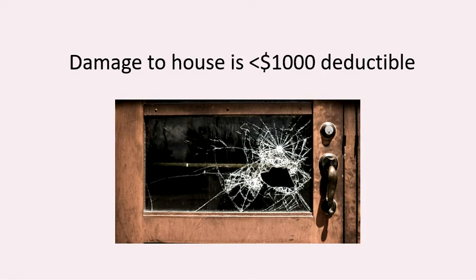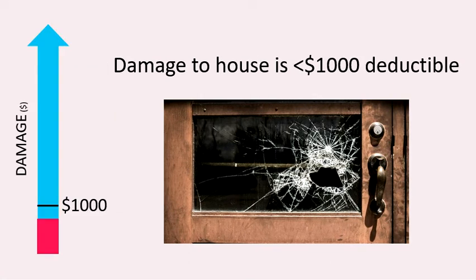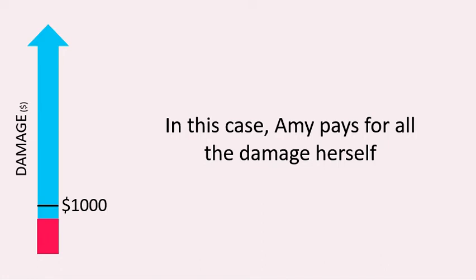There are two possibilities. Damage to the house can be less than $1,000, and that would look like the graph on the left-hand side — you'll see a red area showing the damage is less than the deductible. Maybe a rock flew from the tornado and broke a window, so it won't cost much to fix — less than $1,000. In this situation, Amy would have to pay the full amount herself; the insurance company wouldn't pay anything because the damage was less than the $1,000 deductible.